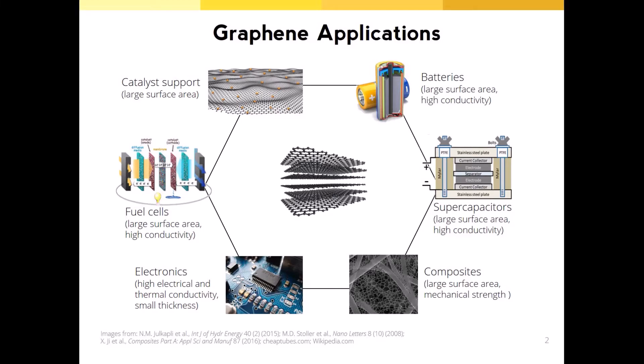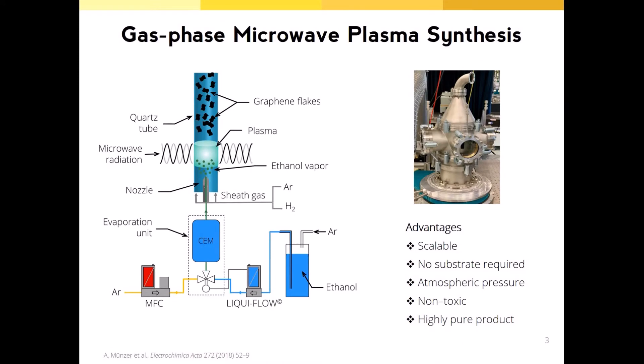One of the promising graphene production methods is gas-phase microwave plasma synthesis. This is a schematic of the synthesis process. We produce graphene from ethanol vapor using microwave plasma. Ethanol is atomized with argon and then evaporated. The ethanol vapor is then introduced into the quartz tube through the nozzle, where microwave radiation is focused and argon plasma is created, which in turn dissociates the precursor molecules into smaller fragments.